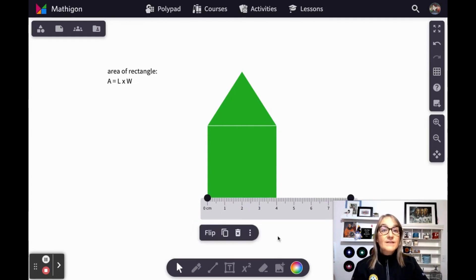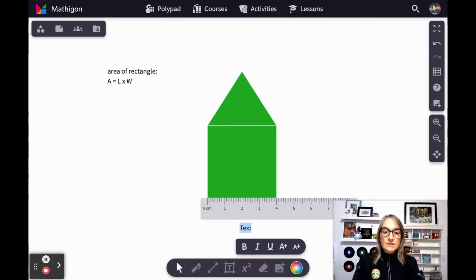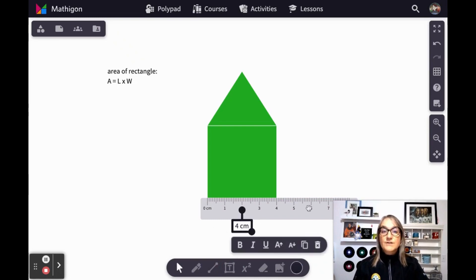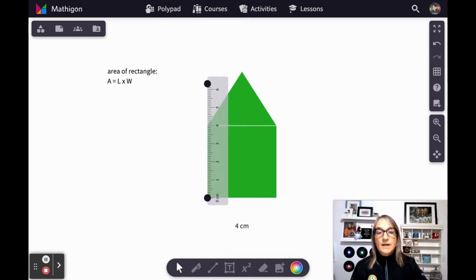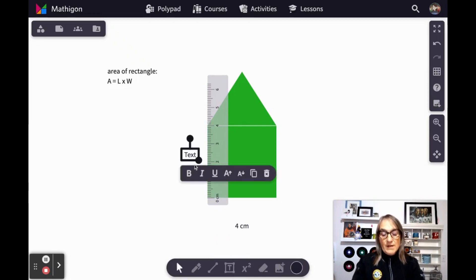We get a width of four centimeters. We can actually just note that here so that we don't lose track. So four centimeters is our first dimension. Now let's just move our ruler and see what we get for the height. And that looks like it is four centimeters as well, which confirms that this is in fact a square because a square is a rectangle with four equal sides.